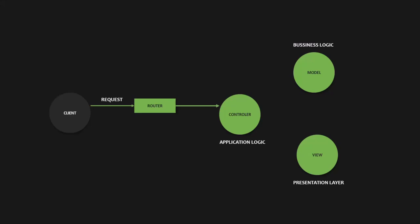Then depending on the request, the controller might need to interact with one of the models — for example, to retrieve a document from the database or to create a new one. There will be one model file for each resource. After getting the data from the model, the controller is then ready to send back a response to the client containing the data. This is in the case of a web API, where the view does not play any part since we do not have a presentation layer.